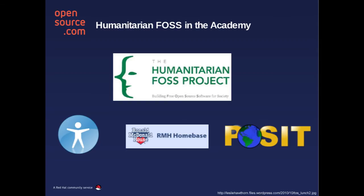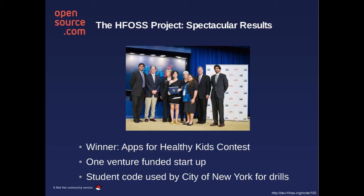Humanitarian FOSS has actually made some amazing inroads in academia — specifically the Humanitarian FOSS Project out of Trinity College in Hartford, Connecticut. This effort came about due to a National Science Foundation grant to explore the concept that underrepresented groups in computer science — women and people of color — would be more likely to enter and remain in a computer science program if the work they were doing had a social good or social justice focus. These folks have had immense success; this photo shows the principal investigators and some students receiving an award from the Apps for Healthy Kids contest, put on by First Lady Michelle Obama to help fight the childhood obesity epidemic. Additionally, code from college sophomores is being used in real-time production to help the city of New York understand what would happen in the event of a disaster and how to allocate shelter resources. The folks also have a venture-funded startup as well.